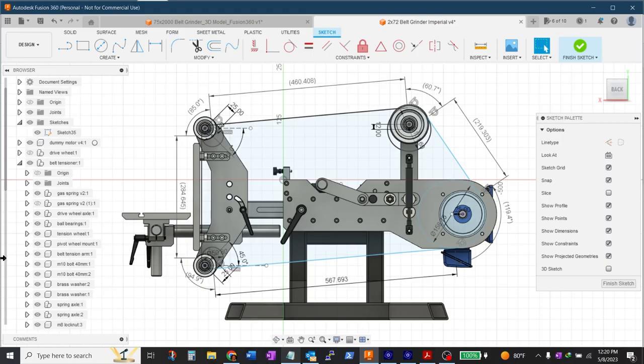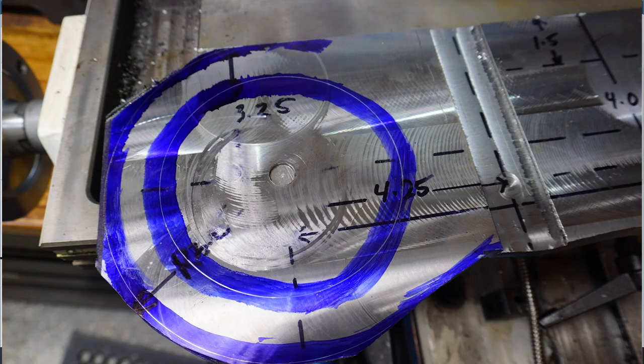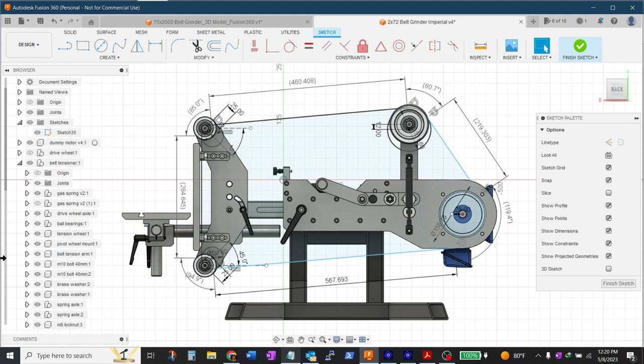You might notice some sharpie marks, some sharpie dimensions on some of my metal in the videos here but I'll warn you that I changed several of them as I progressed. I'll also be changing a few things from Phil's design. These aren't necessarily better just different.